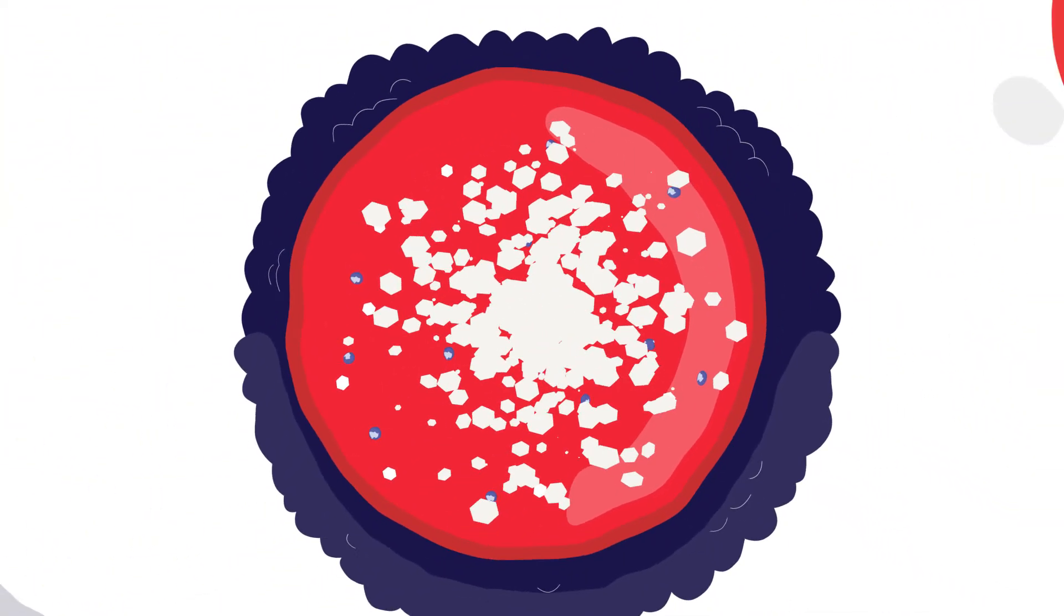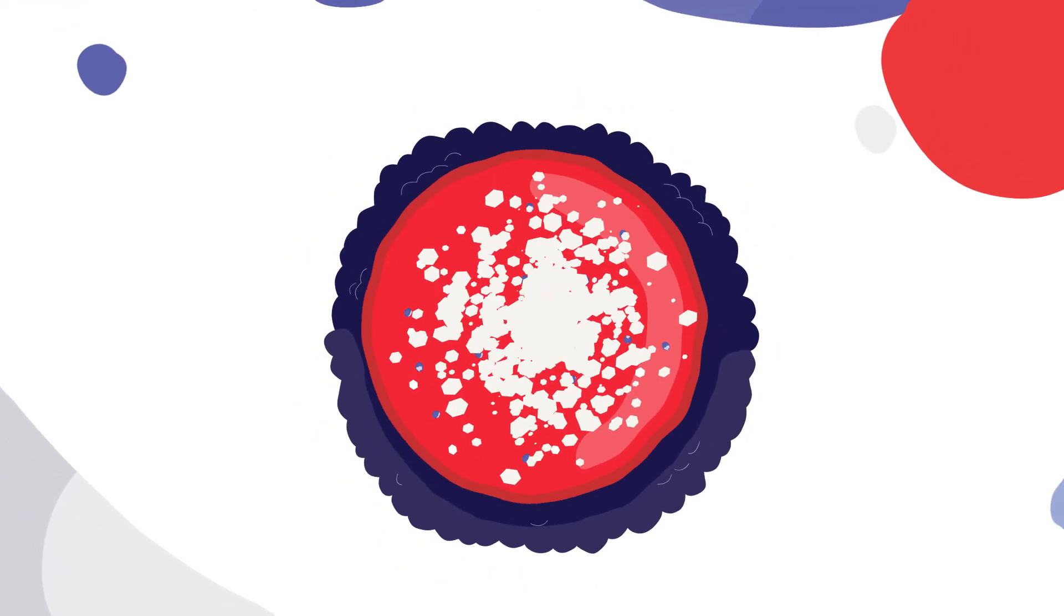Often referred to as the recycling center of our cells, lysosomes break down waste, allowing cells to function properly. But without enough alpha-gal-A, GB3 builds up in the lysosomes, ultimately leading to the symptoms of Fabry disease.